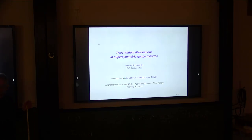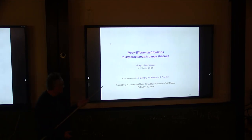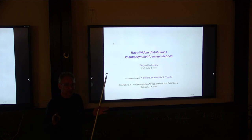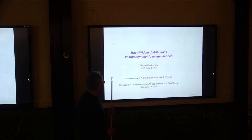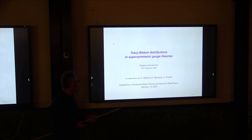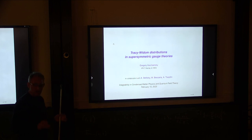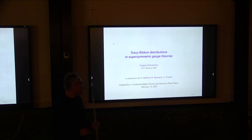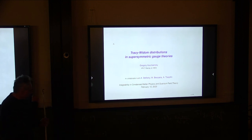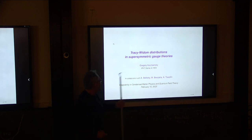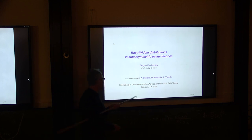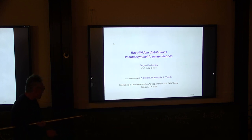I will try to show you that the two different things in my title are closely related to each other. One of them will be the Tracy-Widom distribution — I realized not many people in this audience know what it is, so I will try to define it. The second object will be an attempt to solve a special class of supersymmetric gauge theories, namely four-dimensional superconformal gauge theories. This talk is based on work done together with Andrei Bilitsky, Matteo Beccaria, and Arkady Zeitlin.